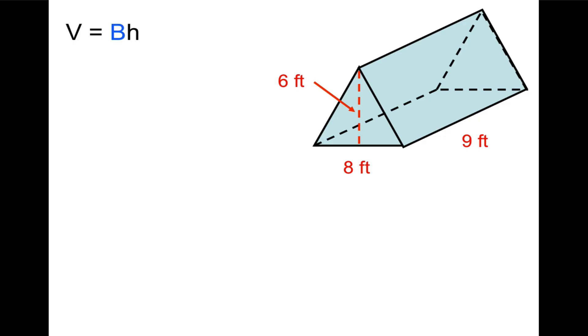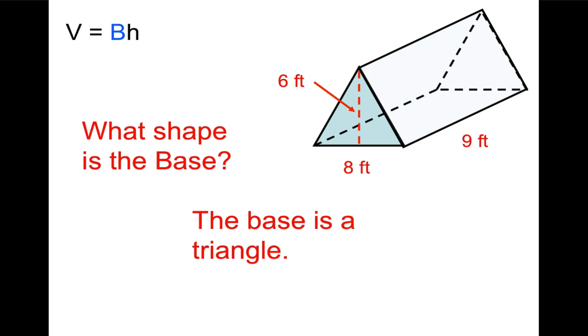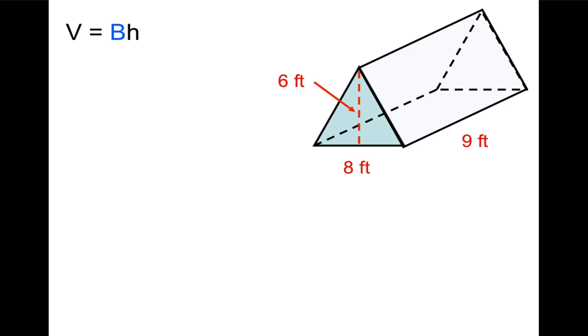Let's start with the volume formula. Volume equals big B times h. Big B, the area of the base, times h, the height of the prism. The prism, by the way, appears to be lying on its side. I would say the height is 9. So first of all, what shape is the base? If we focus on the base, you'll notice it's a triangle. So that means that big B is going to be the triangle formula of area. Big B is going to equal 1/2 times base times height.